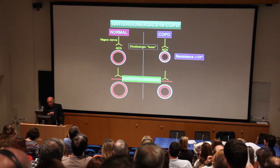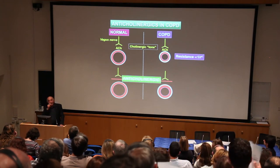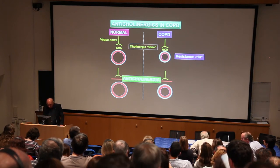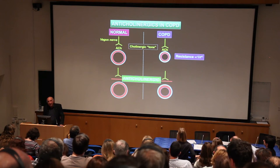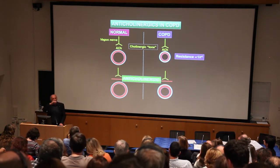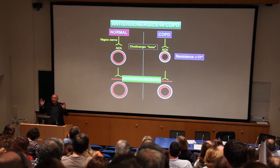We take away cholinergic tone by giving anticholinergics, which block M3 receptors on muscle cells. Even in normal people, if you give anticholinergics, airway resistance comes down — but it's a small change because the airways are already almost fully patent. But in COPD, this has a big effect and you get a large reduction of resistance because of this geometric relationship.